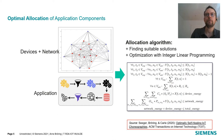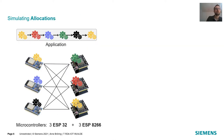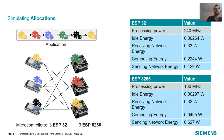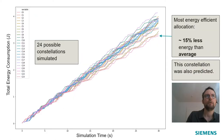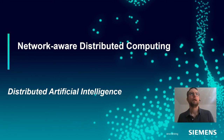We evaluated our mathematical model by running a simulation using six components in the application and six devices representing microcontrollers. We tried to minimize energy consumption, so we produced an energy model for each device and ran a simulation for all 24 possible allocation constellations. The one that consumed the least energy — the one at the bottom — was 15% more energy efficient, and it was also the one that our mathematical model selected, confirming our approach.